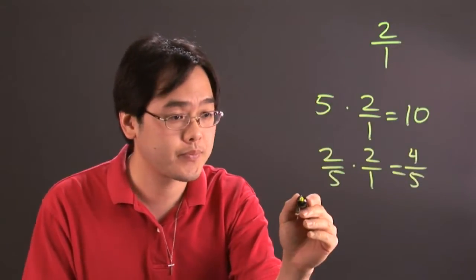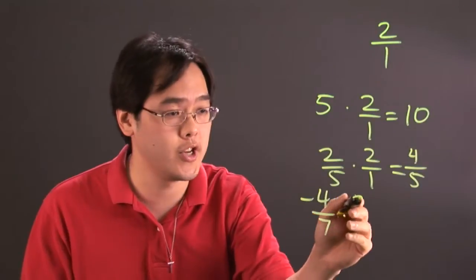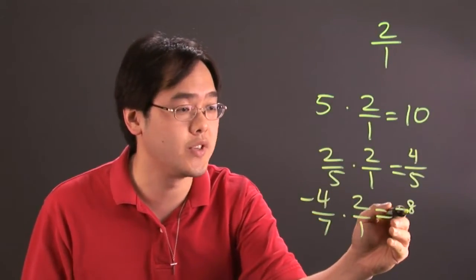Even if you have a negative number, negative 4 sevenths, and you're multiplying by 2 to 1 ratio, same kind of idea. You have negative 8 over 7.